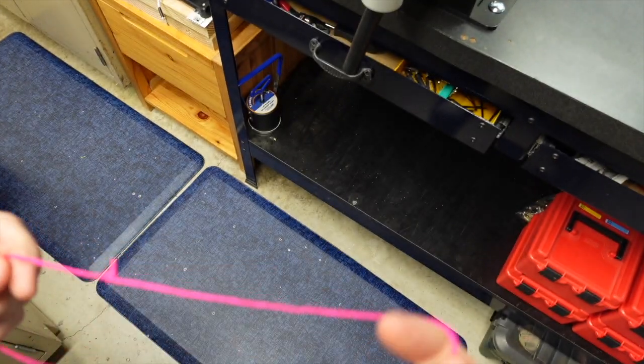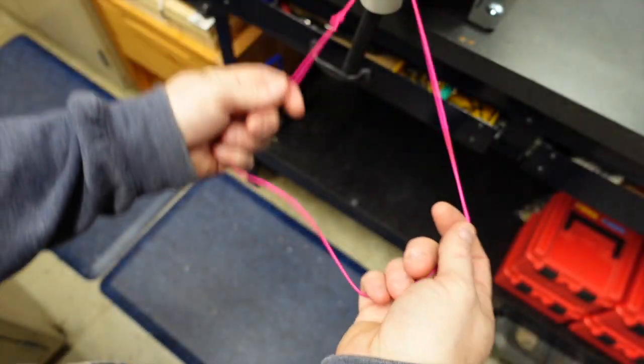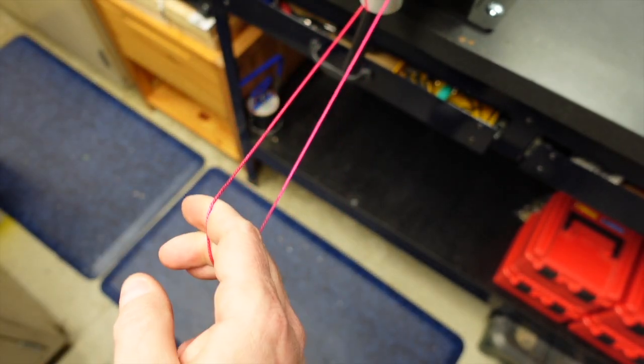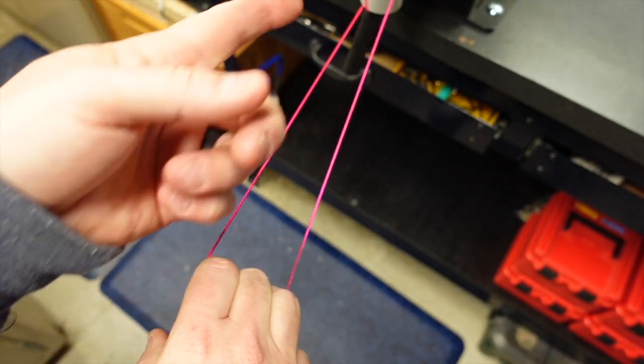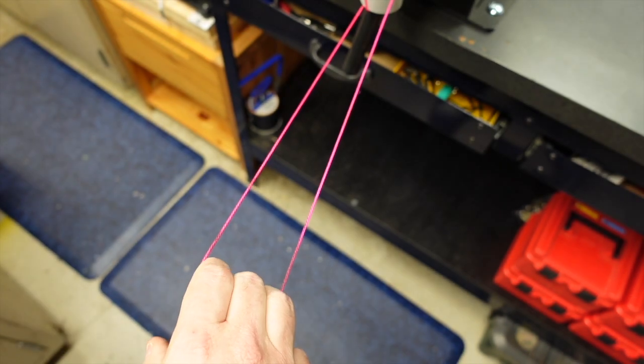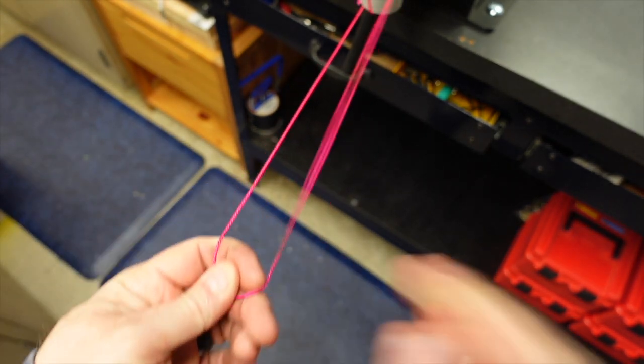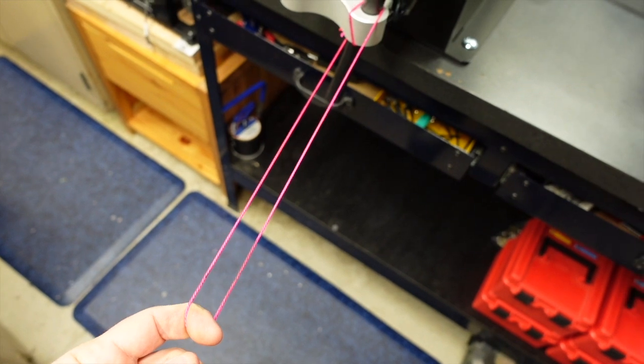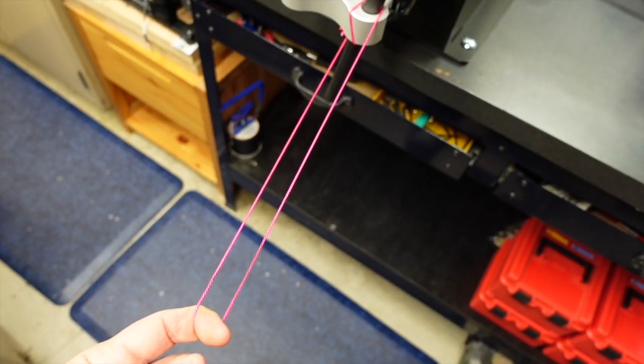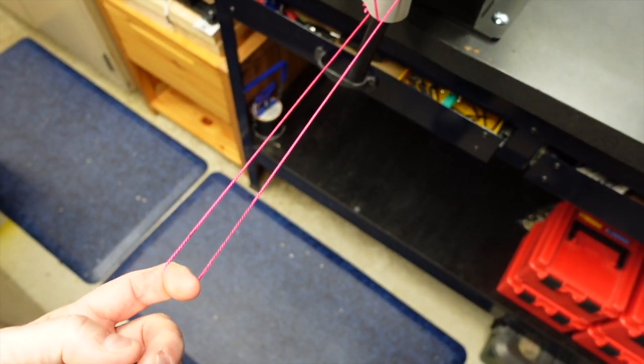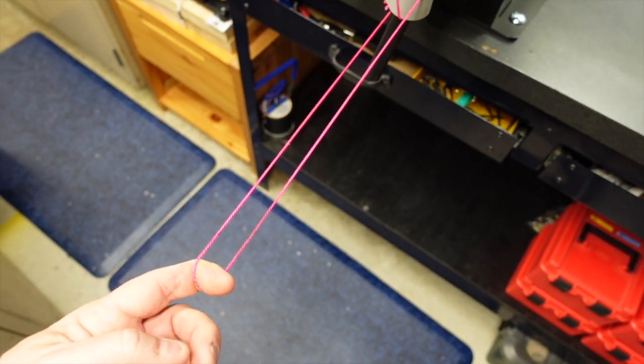So first thing we need to do is find an anchor point. I know people who have used trailer hitches. I've used my foot before. Anything you can pull hard on. I happen to be using my press handle here. And you can see if I angle up just a little bit, you'll see it's on my handle there. So let's come over here now.